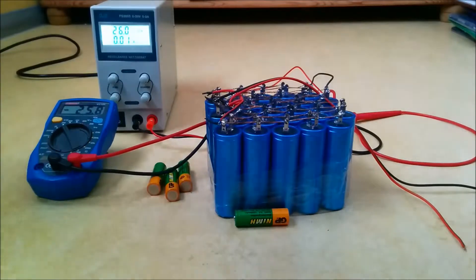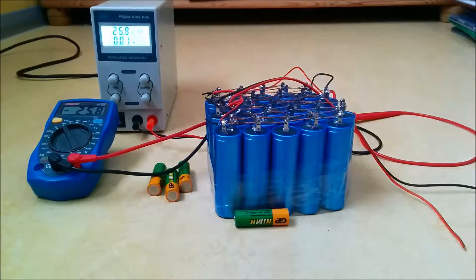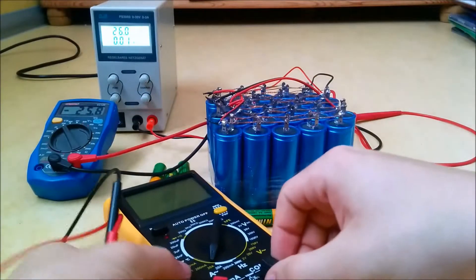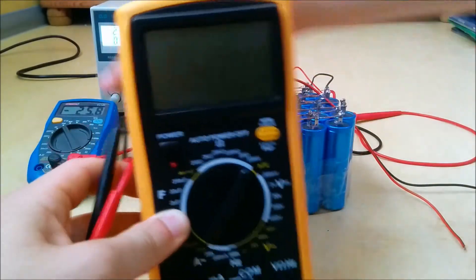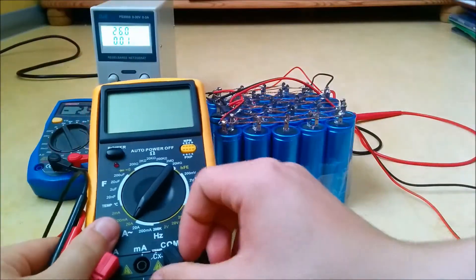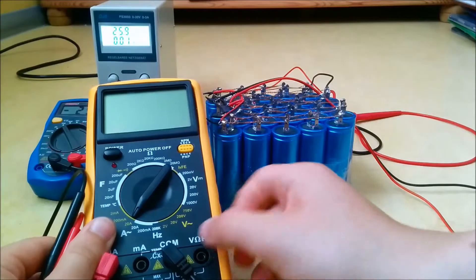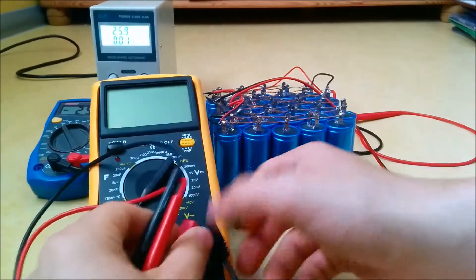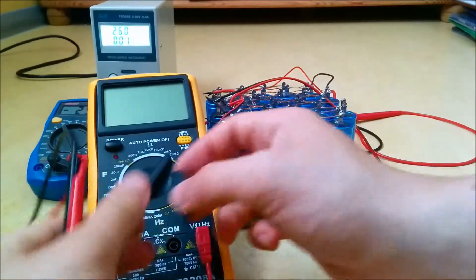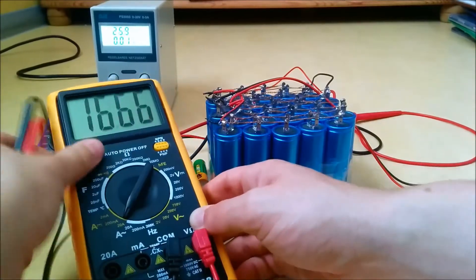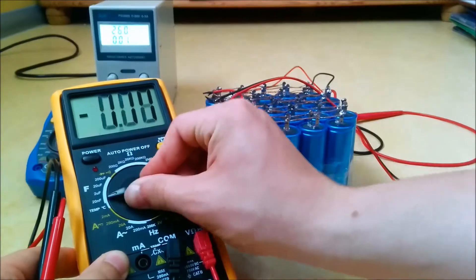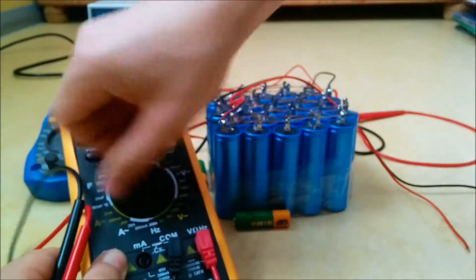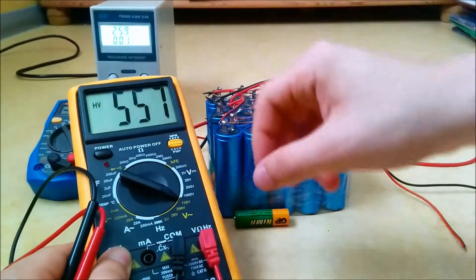We start off taking a voltmeter and checking the voltage of the batteries, just to give you kind of an overview of how they are performing right now. So we go to the DC volt range of our voltmeter.